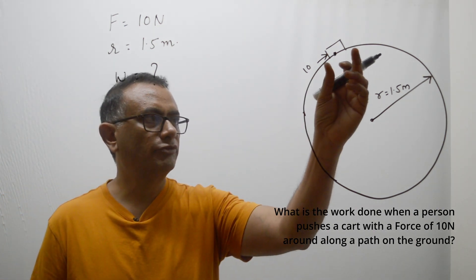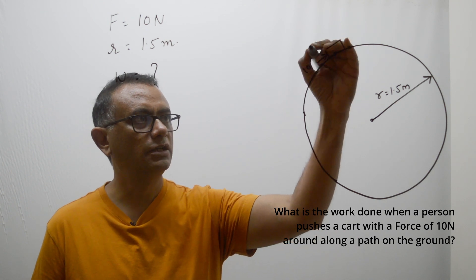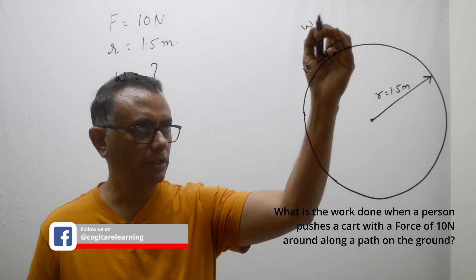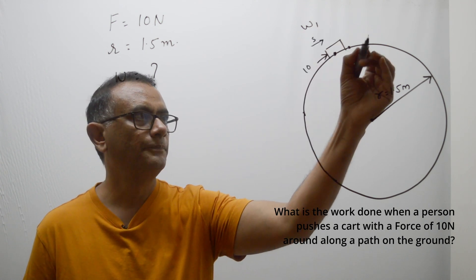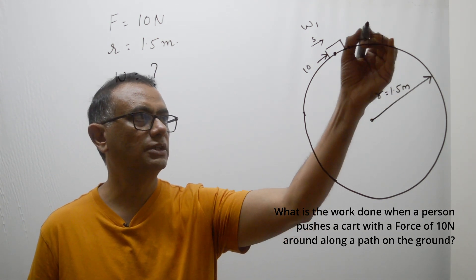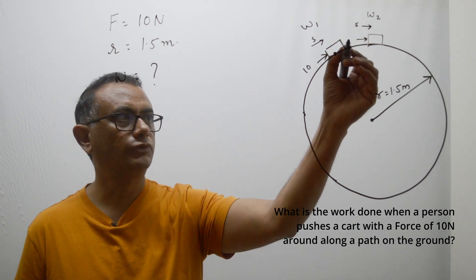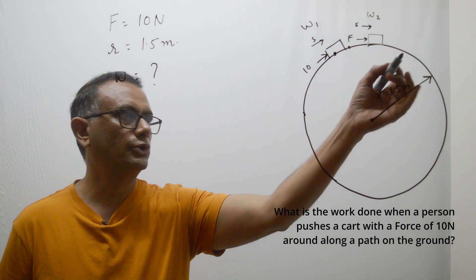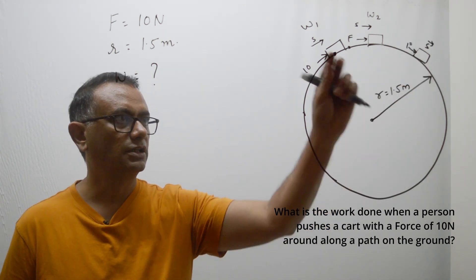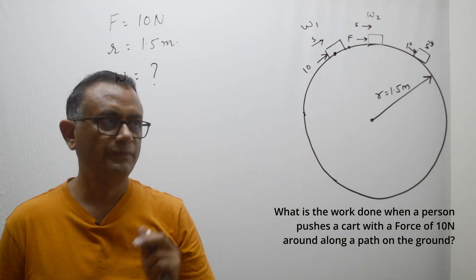But that is a misconception. What we do is break the displacement into small small displacements. Consider this part — during this part, force and displacement are in the same direction, with theta equal to zero. We compute work done W1 for this section, then look at the next section where the direction of force has changed and displacement direction also has changed. In every stretch around the circle, force and displacement continue to be parallel, so we compute individual chunks of work and sum them up.